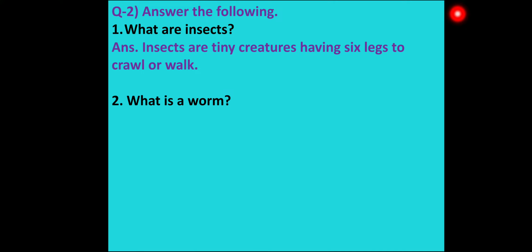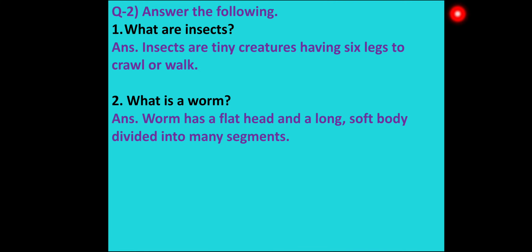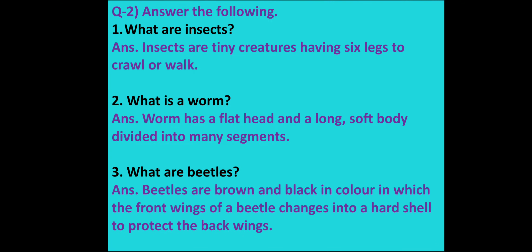Second question: What is a worm? A worm has a flat head and a long soft body divided into many segments. Question number 3: What are beetles? Answer: Beetles are brown and black in color, in which the front wings of a beetle change into a hard shell to protect the back wings.